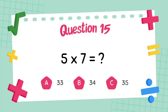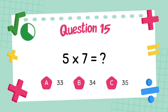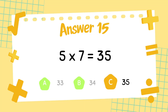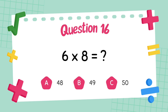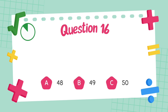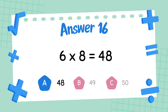What is five multiply seven? The answer is thirty-five. What is six multiply eight? The answer is forty-eight.